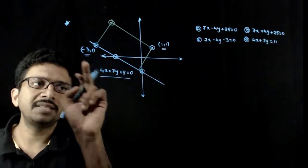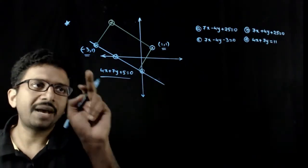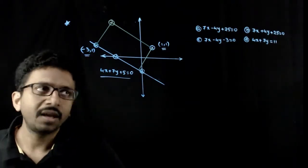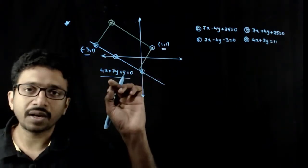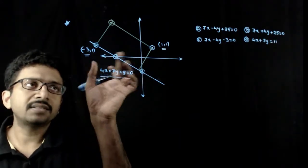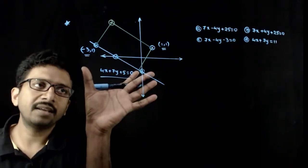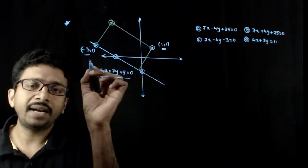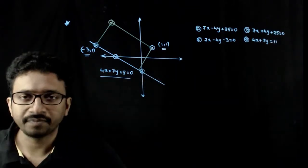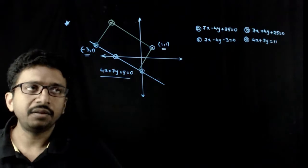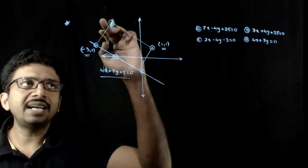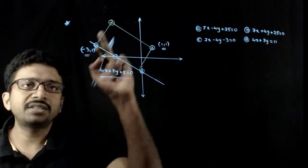By substitution, you can see that (-3, 1) lies on this line — (-3, 1) is satisfying this line. So I am plotting (-3, 1) on this line. And (1, 1) is not satisfying this line, so (1, 1) has to be on the other side. With this information, one side of the rectangle lies along this line, one vertex is (-3, 1) and the other vertex is (1, 1). So you can complete the rectangle. You are asked to find the equations of sides of the rectangle.